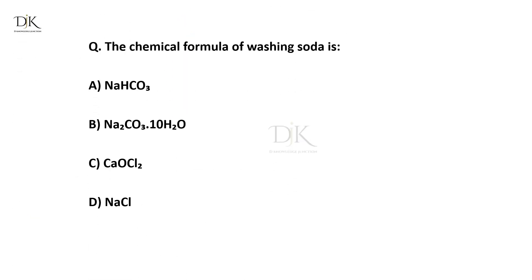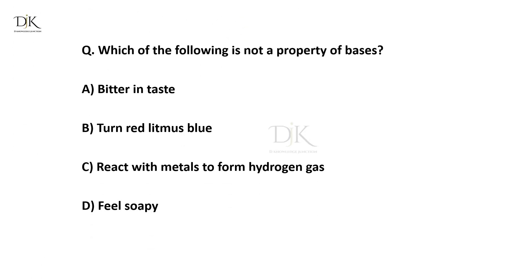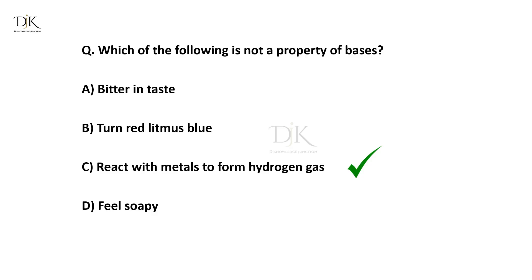What is the chemical formula of washing soda? The right answer is Na2CO3·10H2O. Which of the following is not a property of bases? The right answer is react with metal to form hydrogen gas.